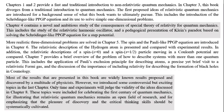Chapters 1 and 2 provide a fast and traditional introduction to non-relativistic quantum mechanics. In Chapter 3, this book diverges from a traditional introduction to quantum mechanics. The first proposed ideas of relativistic quantum mechanics are introduced for a background sense of what this book ultimately pursues. This includes the introduction of the Schrödinger-like PPGP equation and its use to solve simple one-dimensional problems. Chapter 4 contains a novel and ambitious study of the consequences of special theory of relativity for quantum mechanics. This includes the study of the relativistic harmonic oscillator and a pedagogical presentation of Klein's paradox based on solving the Schrödinger-like PPGP equation for a step potential.